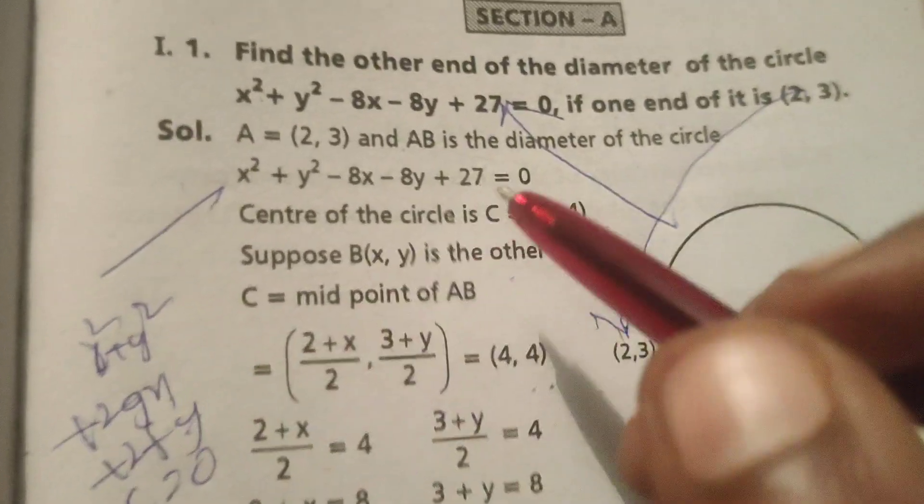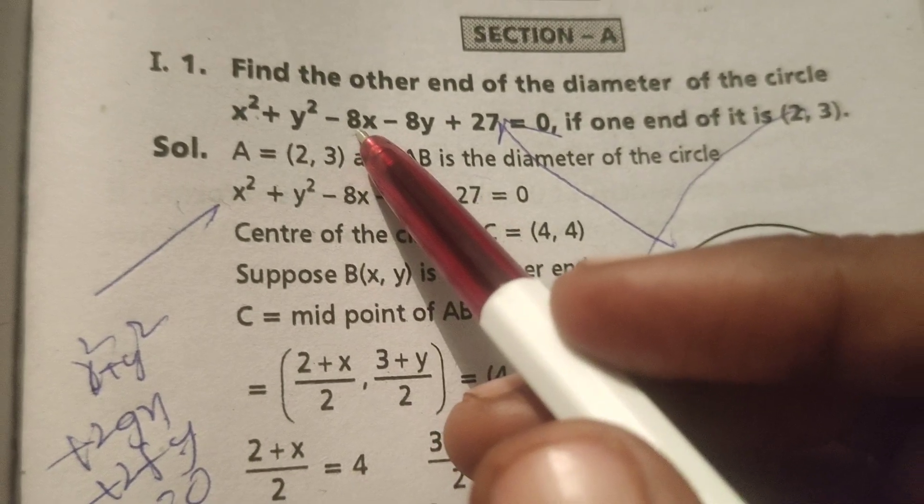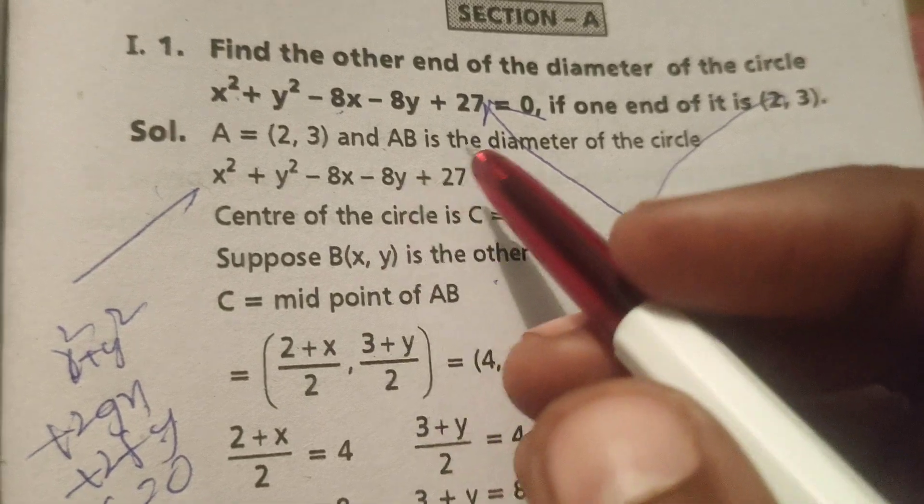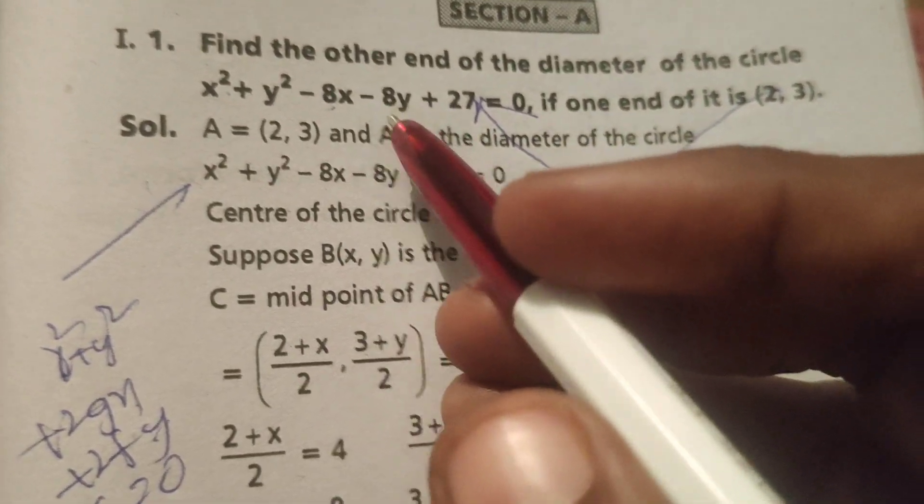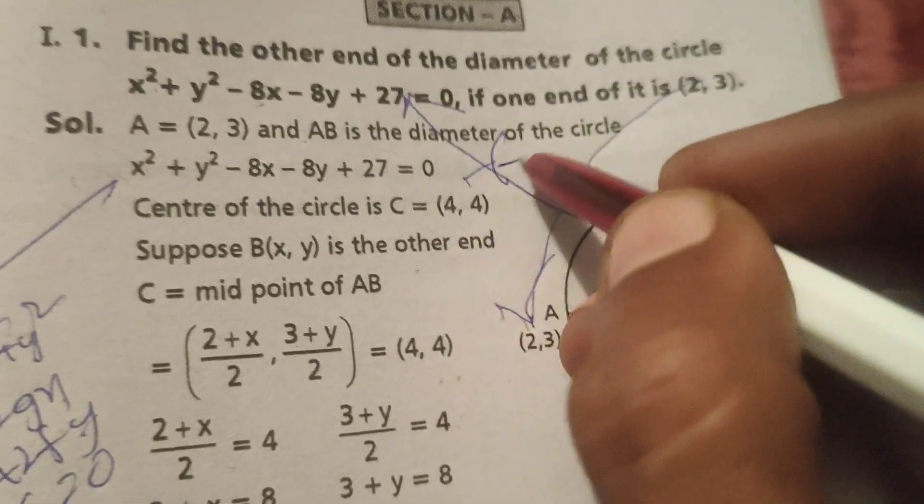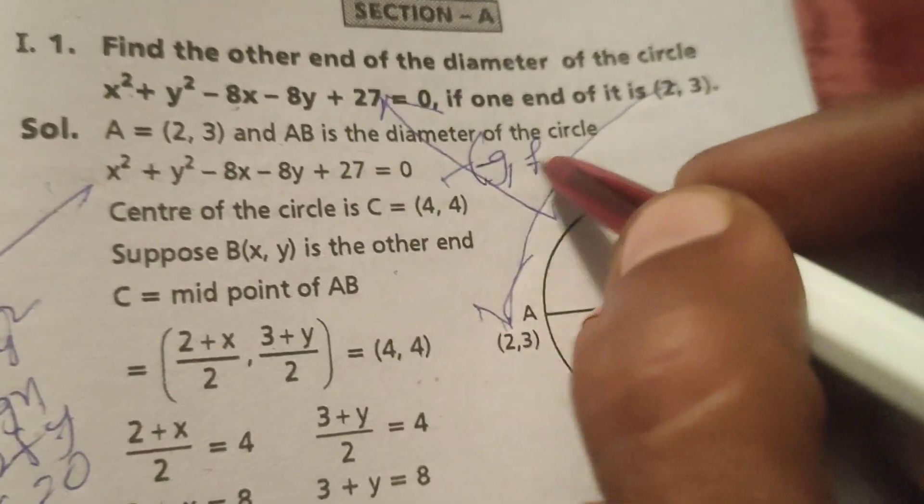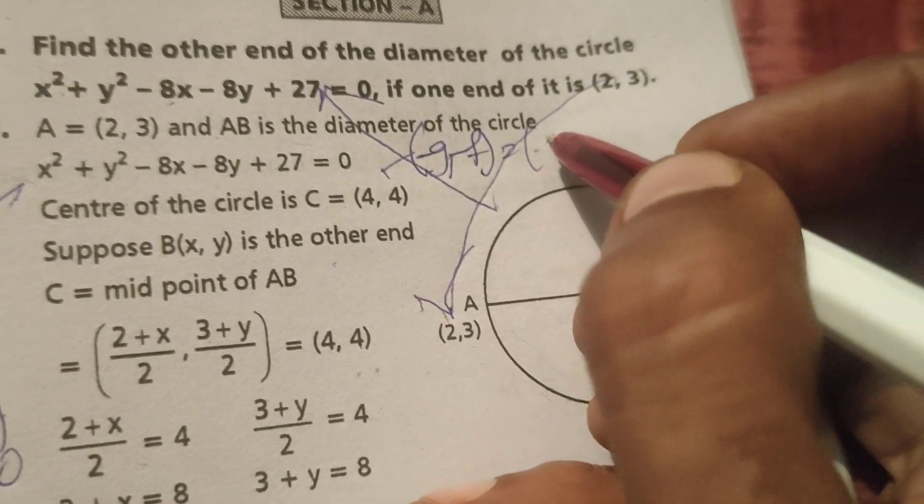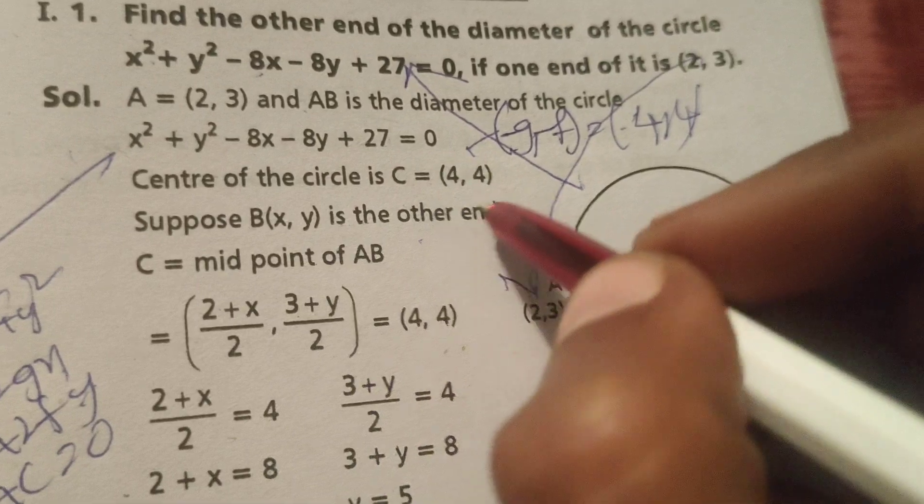So here 2g = -8, so g = -4. 2f = -8, so f = -4. Center formula is (-g, -f), so here -(-4), -(-4) means (4, 4).